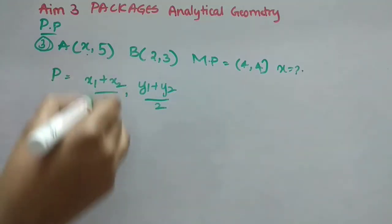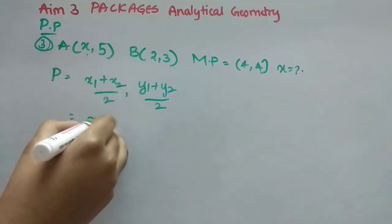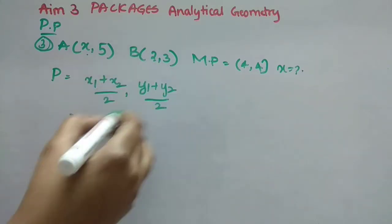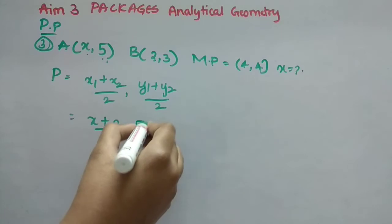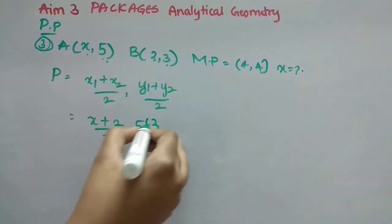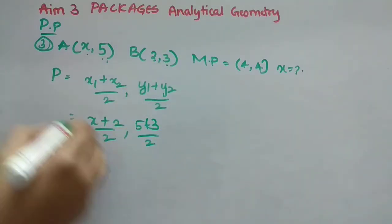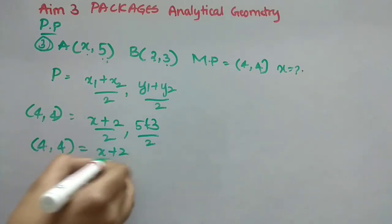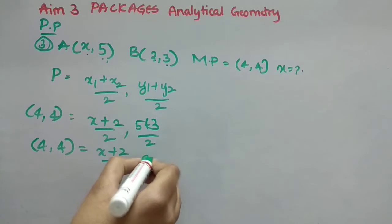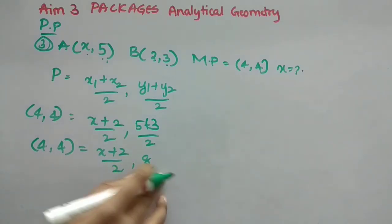So what is the formula for the midpoint? X1 plus X2 by 2, Y1 plus Y2 by 2. So what is X1? It is X, right? Plus X2 is 2 by 2, Y1 is 5 plus Y2 is 3 by 2.